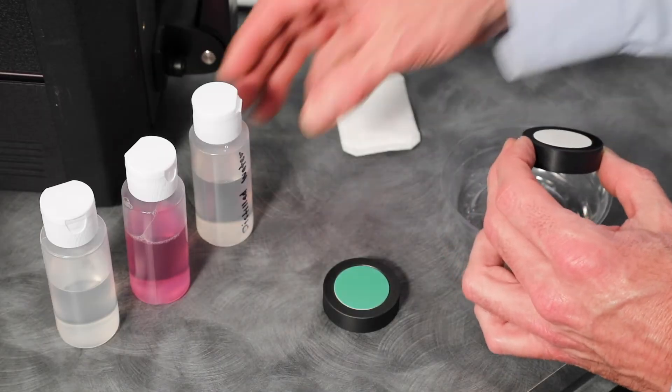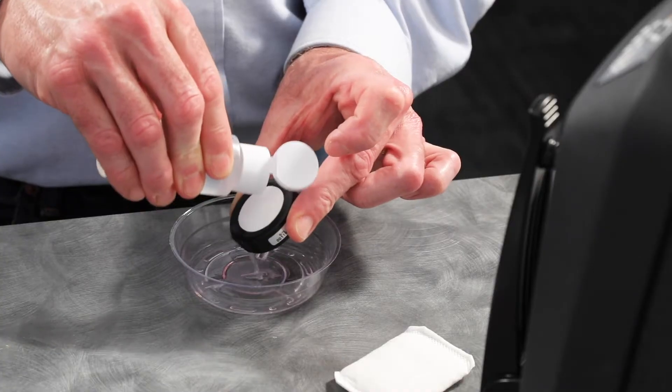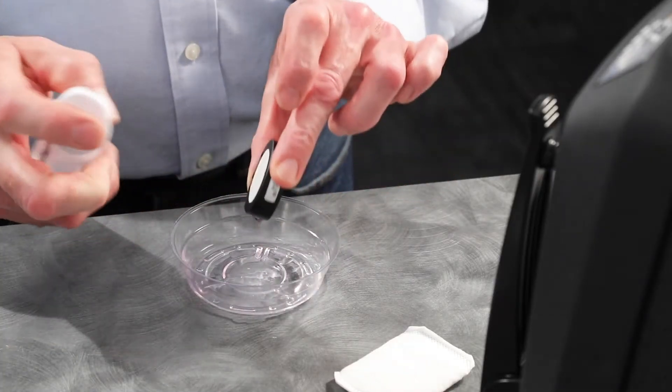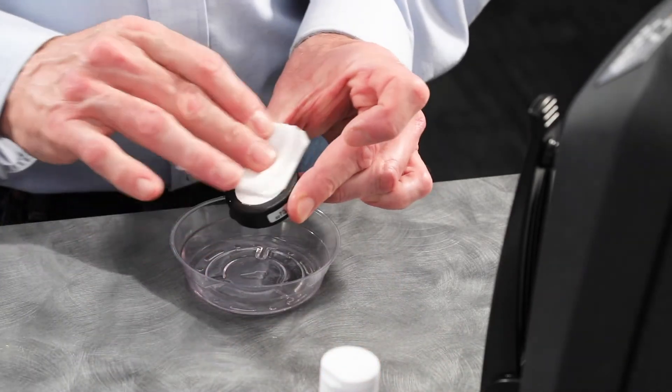Finally, use the distilled water to rinse off the remaining glass cleaner before it dries. Dry the surface completely using one last wipe.